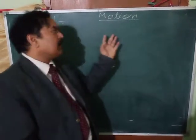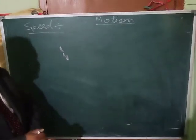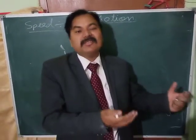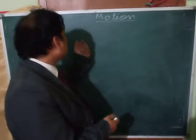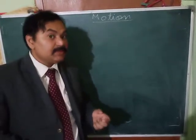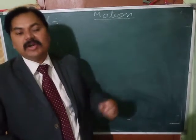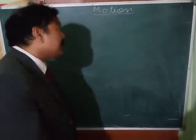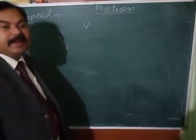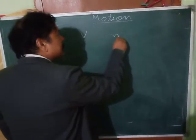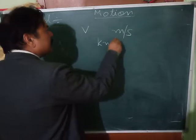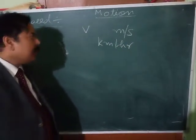The next topic of the chapter on motion is speed. Speed tells us how fast a body is covering distance. The definition: speed is the distance covered per unit time. It is a scalar quantity, denoted by V. Its SI unit is meter per second.